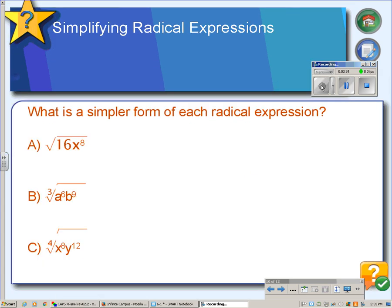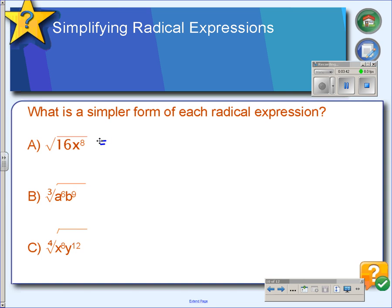Here are some examples that are a little bit more complicated because they have variables in them. So if we're going to do the square root of 16x to the 8th, we take the square root of 16, which is 4, and then the square root of x to the 8th. So we're looking for groups of 2. So there's 1, 2, 3, 4 groups of 2.